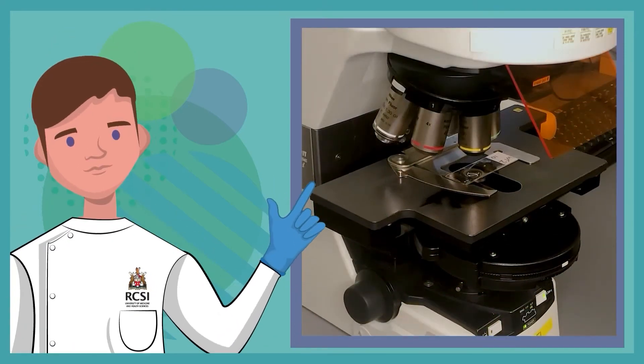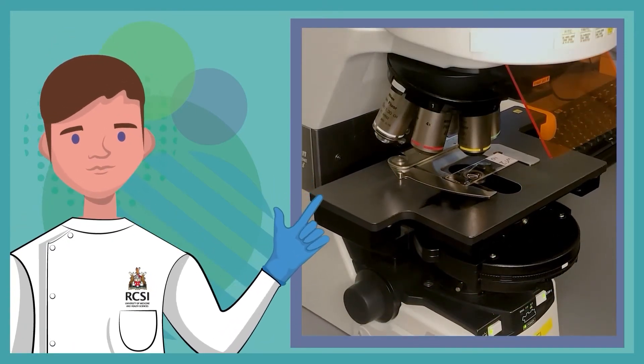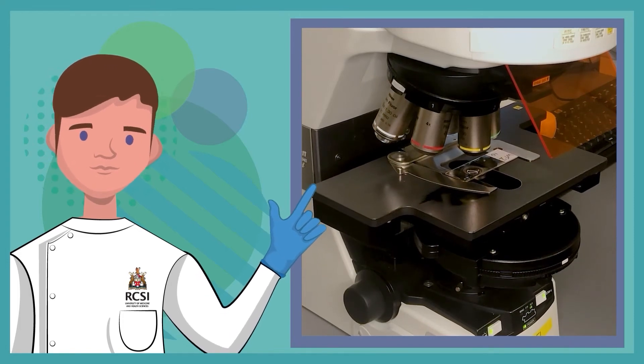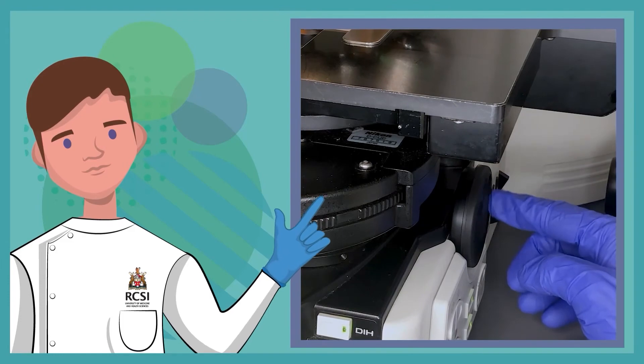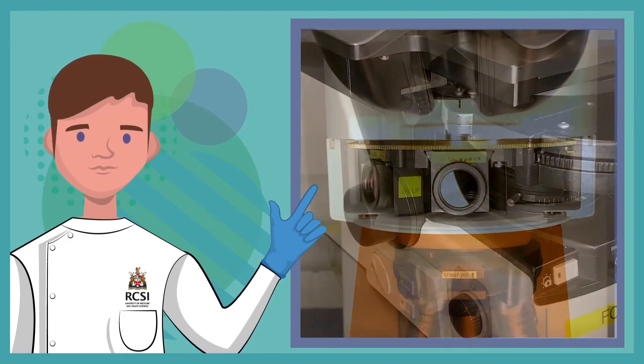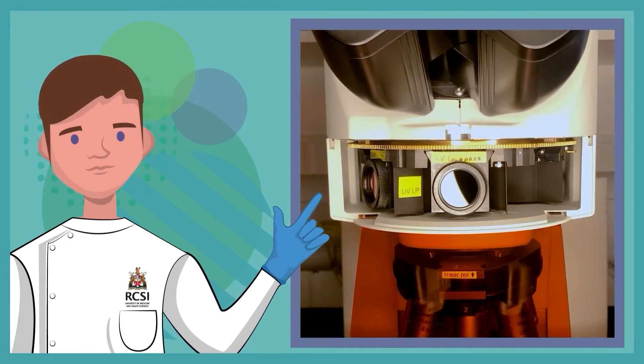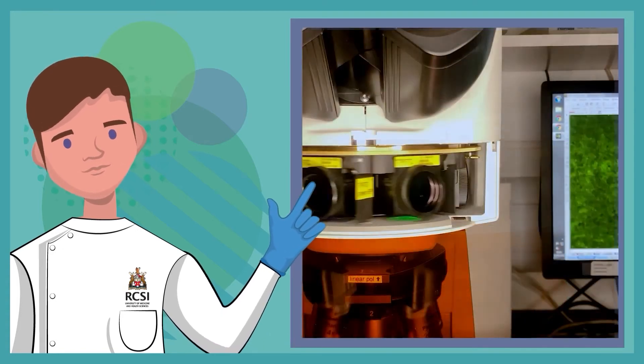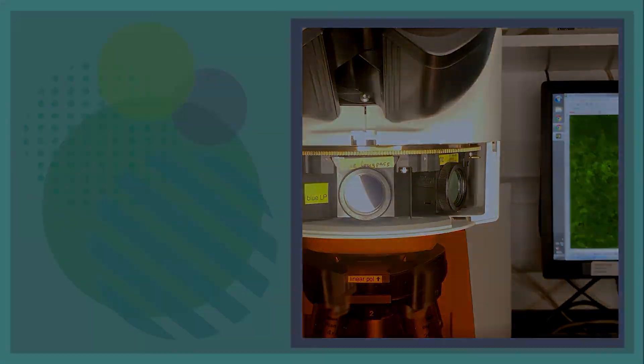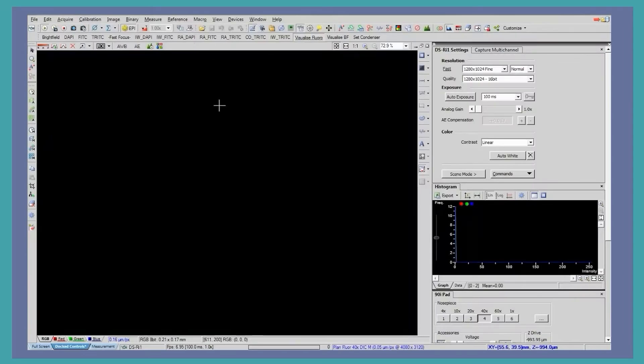While many microscopes are different, there are also many automatic features that can help bring your sample into auto focus. Additionally, you can do this manually through the coarse or fine focus knob. As we capture an image of different colors, the microscope will flick through different filters for each corresponding color. Once you've found a region of interest on your sample that you're happy to image, you can then focus on the computer interface, and this is an example of what it might look like.